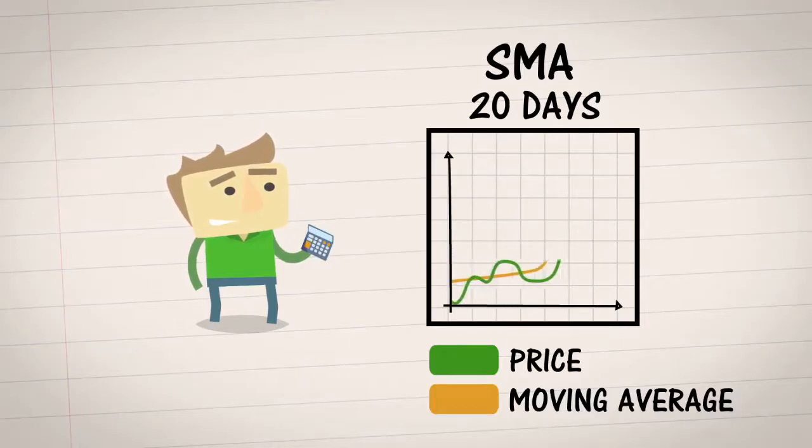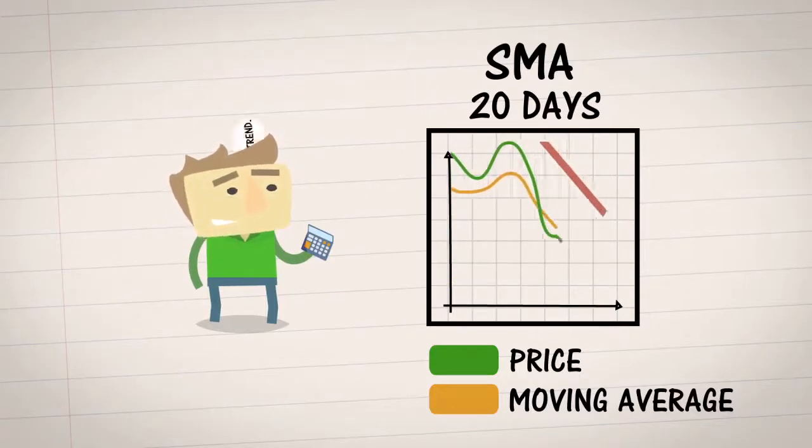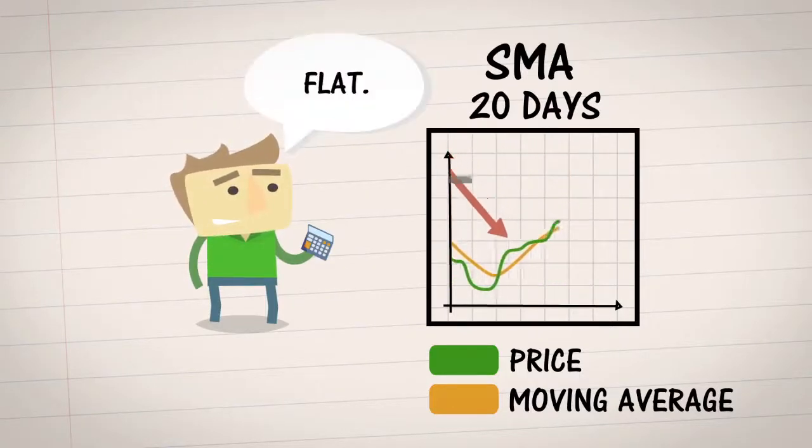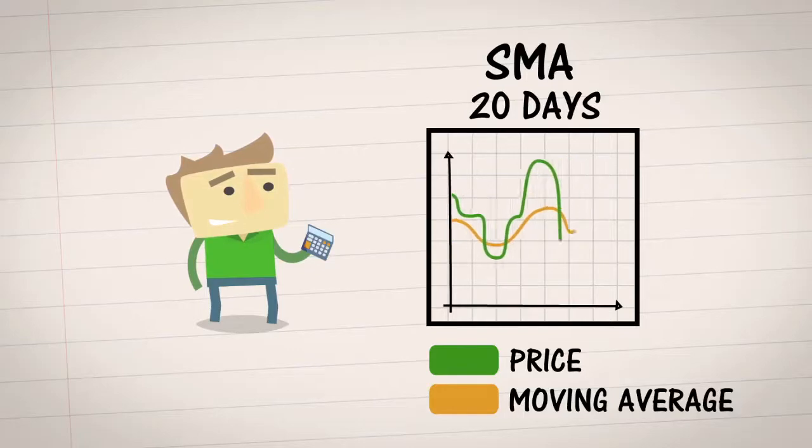If the SMA is sloping upwards, that's an uptrend. Sloping down, downtrend. And sideways means flat. A 20-day SMA gives a good picture of the short-term trend, but you can also use other periods like the 50-day SMA and the 200-day SMA for the long-term trend.